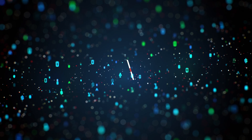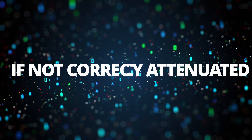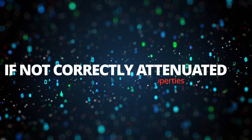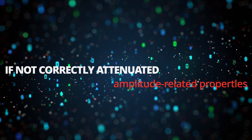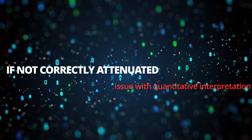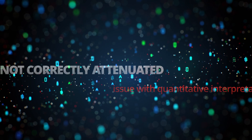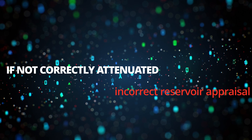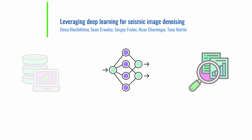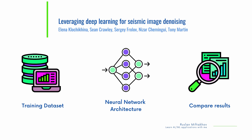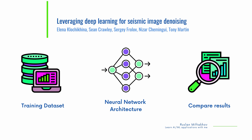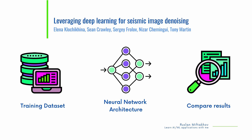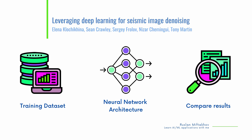If not correctly attenuated, coherent noise might affect amplitude-related properties, cause issues during quantitative interpretation, and result in an incorrect reservoir appraisal. Today's topic is deep learning-based denoising for removing coherent artifacts produced during the migration step.